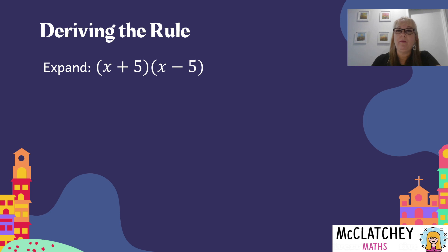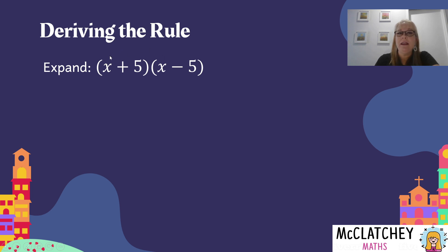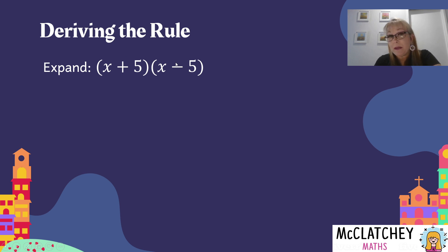Let's have a look first of all at where the DOTS rule comes from. We've got this particular situation here of x plus 5 multiplied by x minus 5. The first term in each set of brackets is the same, the second term in each set of brackets is the same, and the only difference is there's a plus here and a minus here. If both were pluses or both were minuses, we'd be looking at a perfect square. So the big difference between this and perfect squares is one is a plus and one is a minus.